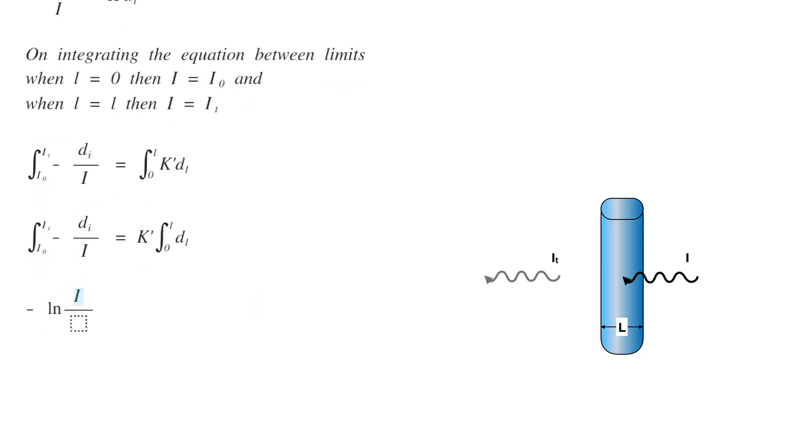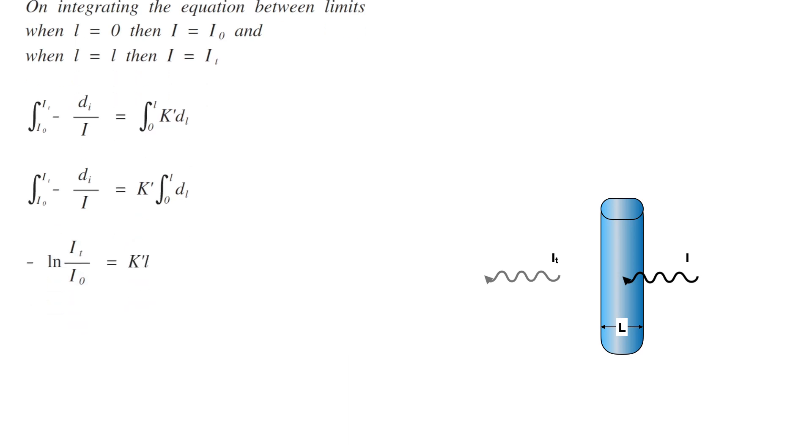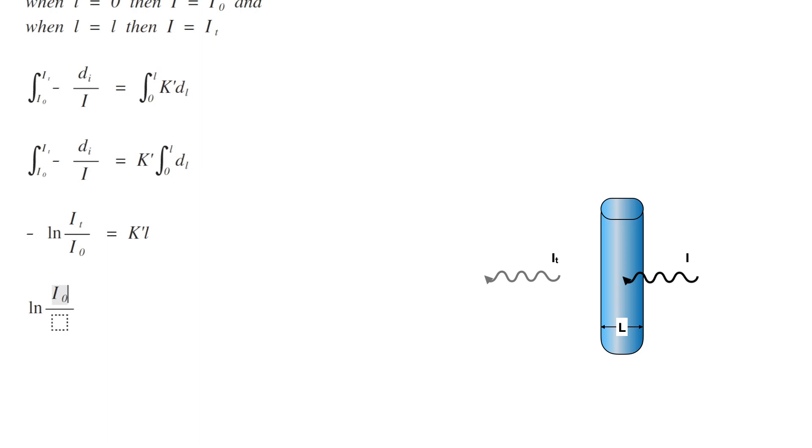Now let's take the integration. So minus ln of Iₜ by I₀ equals K' L. This negative sign can be removed by inverting Iₜ by I₀. Therefore, ln of I₀ by Iₜ equals K' L.